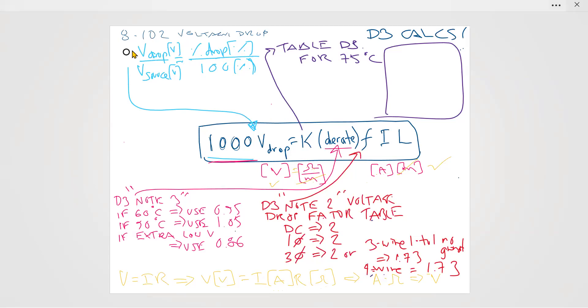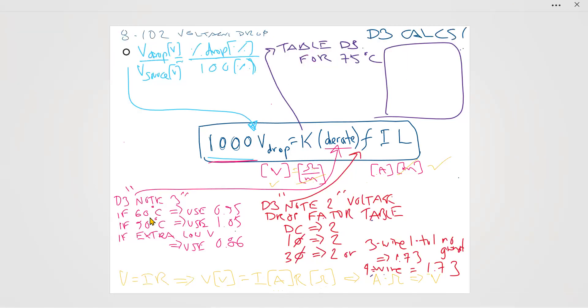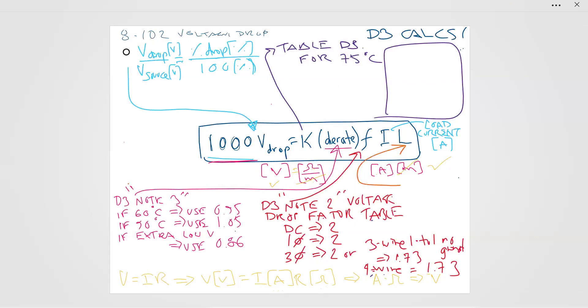Now, I have two more things. Usually this is kind of given in the question. I have I. So I is the load current in amps. And then we have L. And lastly, L is the conductor length. And that's going to be in meters.